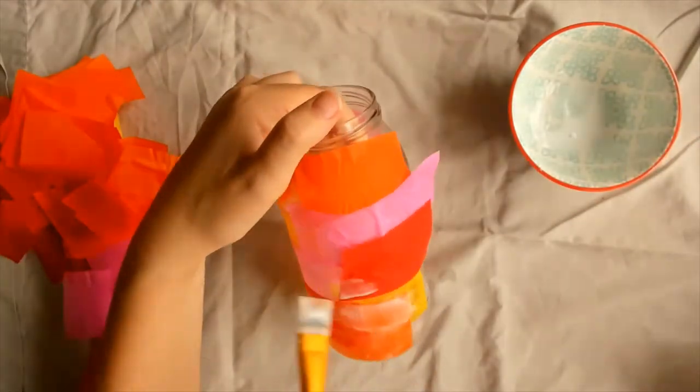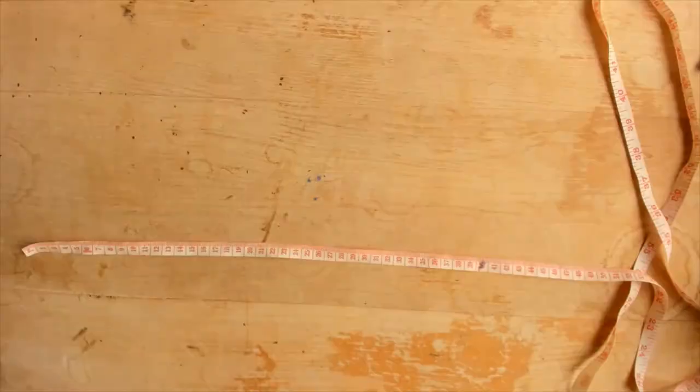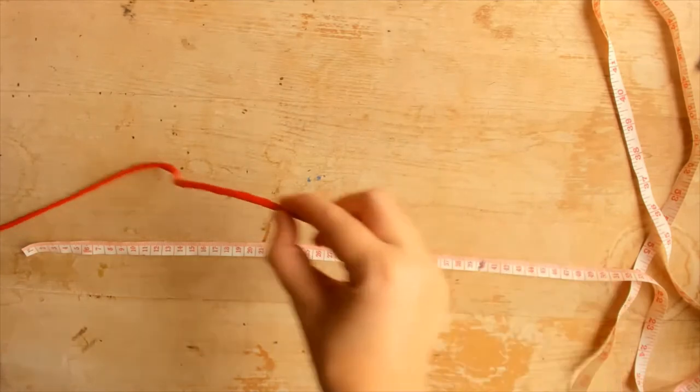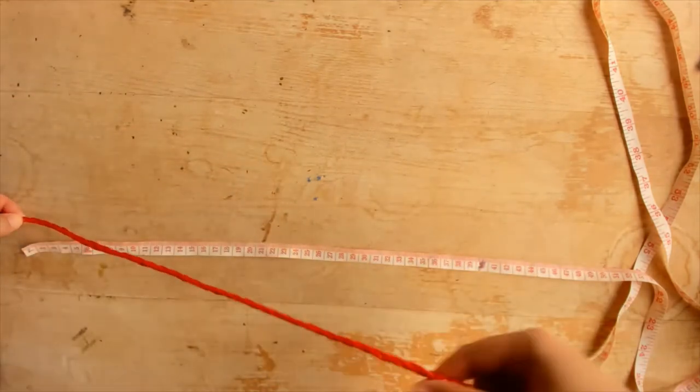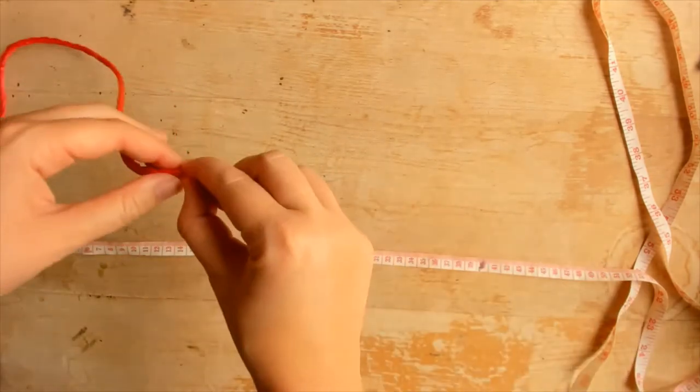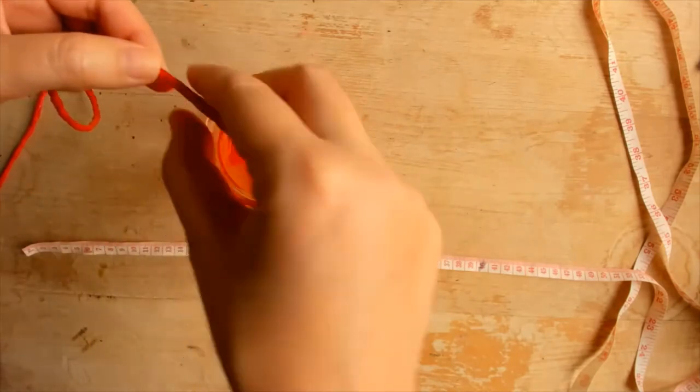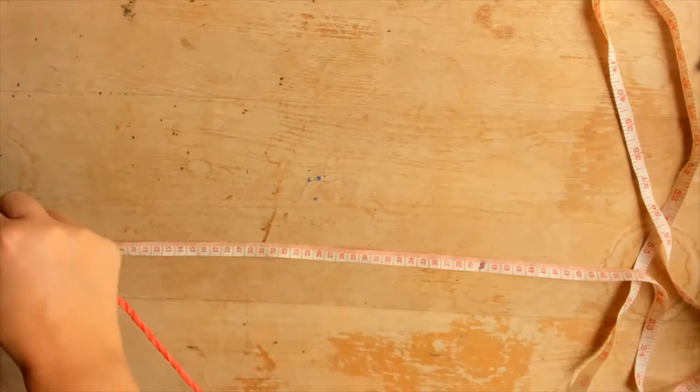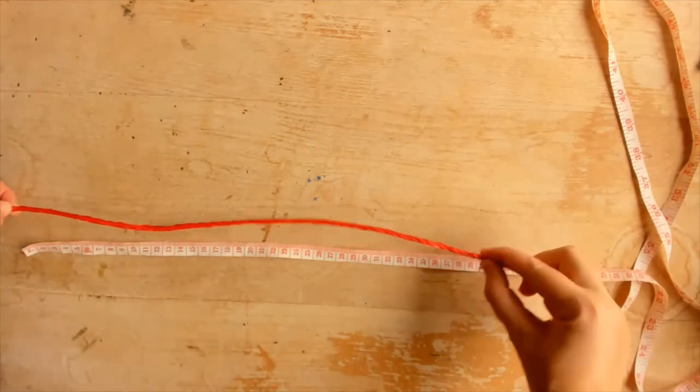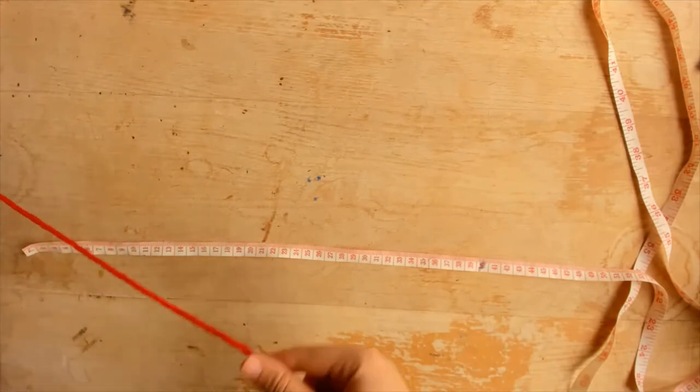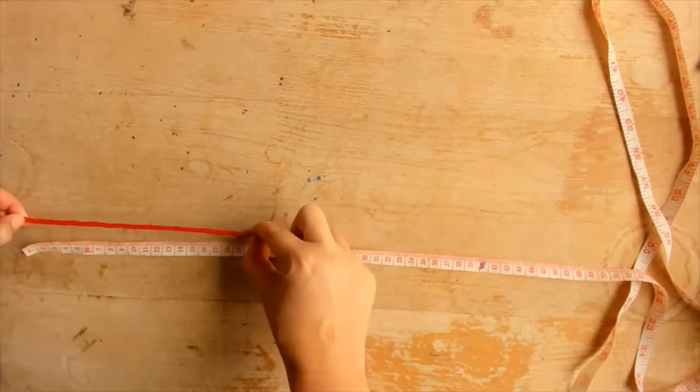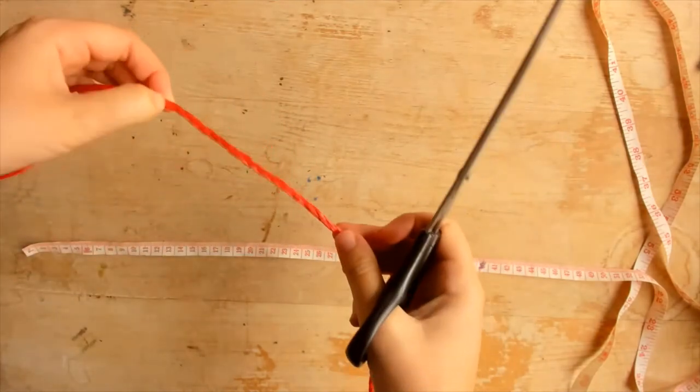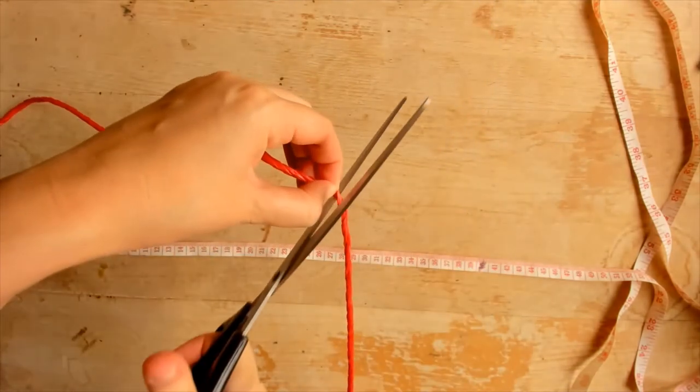Now it's time to make our lantern holder. For this we need our string or cord. First we need to cut four lengths of cord, each piece needs to be the same length. Each piece of cord will need to be 1.5 meters long plus the diameter of your jar. If you have a tall jar like me, maybe add another 20 centimeters. It is better for the cord to be too long than too short. You will need four pieces of cord equal in length.